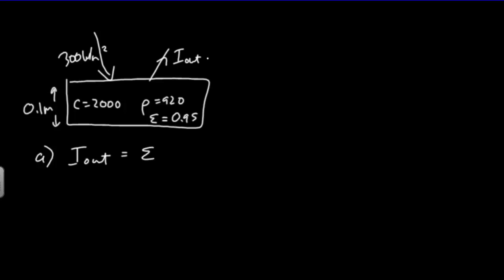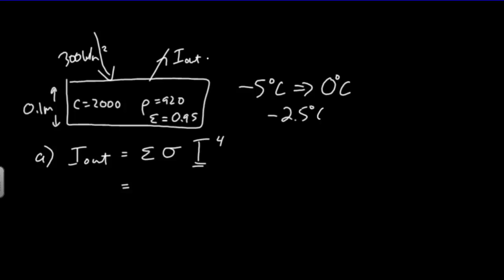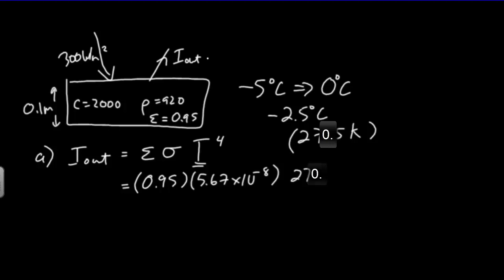Be careful with the temperature: the ice warms from negative 5 degrees Celsius to 0 degrees Celsius, so the average temperature is negative 2.5°C, which is 270.5 Kelvin. Using 0.95 × 5.67×10⁻⁸ × 270.5⁴, you should get an output intensity of about 288 watts per meter squared.